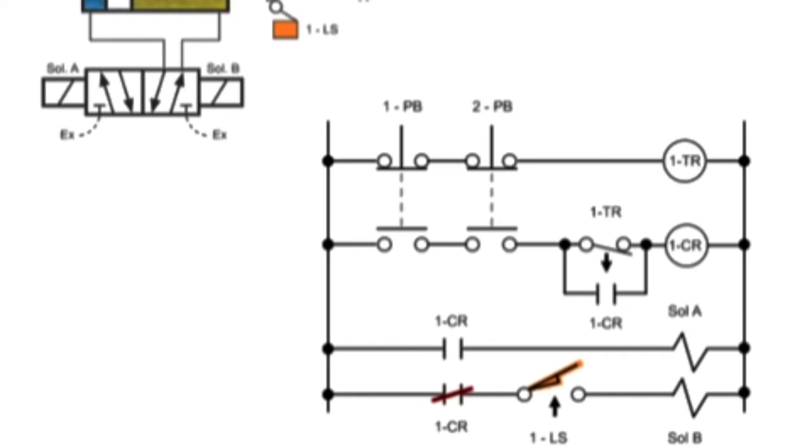Another way to prevent tie-down is to utilize a double solenoid two-position valve. The valve is much simpler and less expensive, but requires a more complex circuit utilizing an off-delay timing relay, normally open-timed open-timer contact, a control relay, two solenoids, and a normally closed limit switch.